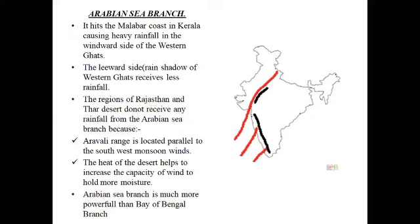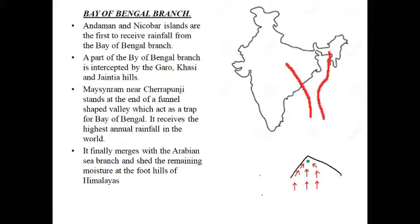The Arabian Sea branch is much more powerful than the Bay of Bengal branch because it is larger in size. Now, looking at the Bay of Bengal branch — the Andaman and Nicobar Islands are the first to receive rainfall from the Bay of Bengal branch. One branch of the Bay of Bengal branch is intercepted by the Khasi, Garo, and Jaintia Hills.